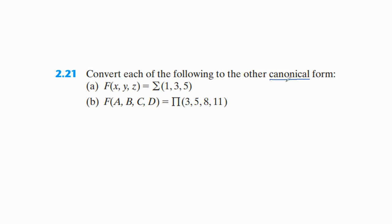Canonical means each term in a boolean expression should represent with the help of all input variables. The first boolean function is f(x, y, z) = Σ(1, 3, 5). The second equation is F(A, B, C, D) = Π(3, 5, 8, 11). The first expression is in the form of SOP and the second is in the form of POS, because sigma is the operator for SOP and pi is the operator for POS. SOP means sum of the products; POS means product of the sums.